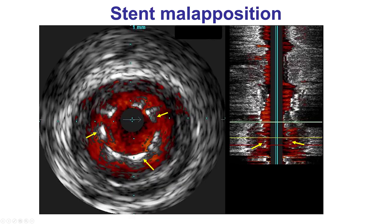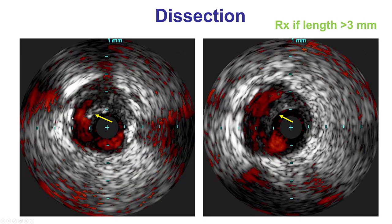IVUS can also detect stent malaposition, although OCT is more sensitive. Here is an example of a grossly malaposed stent. Using the chroma flow feature, specific to the Eagle Eye phased array IVUS, blood flow going behind the stent struts can be shown. Clearly this was an undersized stent that requires aggressive postdilation. This is also an example of dissection — IVUS is not as sensitive for detecting dissection as OCT due to lower resolution, but here we can see tissue planes with flow behind them, suggestive of a significant dissection.